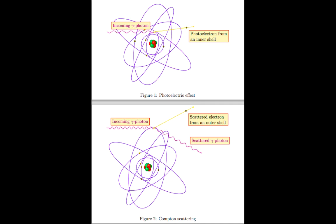We're going to see later on how this plays an important role for imaging, and how at different keV levels we have different predominance of the photoelectric effect or Compton scatter, depending on the keV. We'll talk more about that in another video.